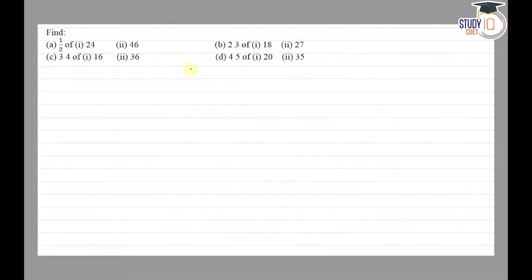Hello everyone, this question appears in class 7th NCERT chapter on fractions and decimals. This is the fifth question of exercise 2.2. The question says find: (a) half of 24, and (ii) half of 46.